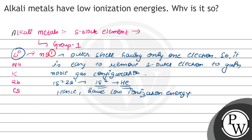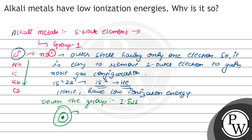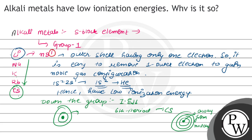One more thing: if you go down the group, ionization energy further decreases. Why? Because for lithium, the nucleus is very close — then the 1s shell, then the 2s shell — so it is hard to remove the electron from 2s as it is very close to the nucleus. But if you consider cesium, it belongs to the 6th period, meaning there are 6 shells, so the outer electron is far away from the nucleus. If it is far from the nucleus, it is easier to remove. So, as you go down the group, ionization energy further decreases because it is easier to remove only one electron to get the noble gas configuration.